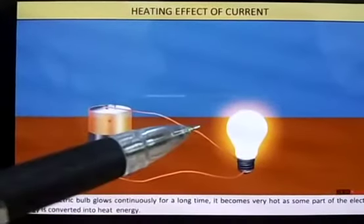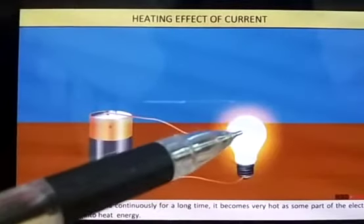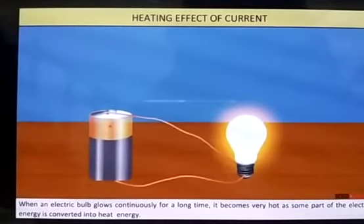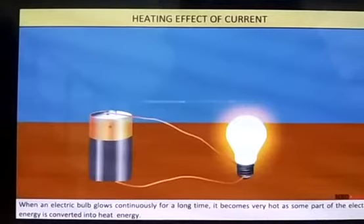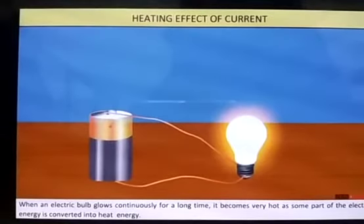Once you touch it, it will become hot. You are not able to touch the bulb. The filament that is inside the bulb will be hot. This shows that electricity produces heat. When the electric current passes through any object, the object will get heated up.